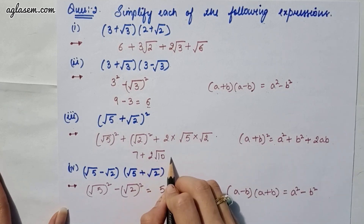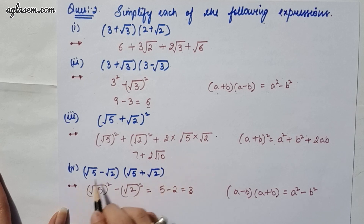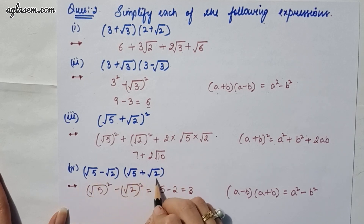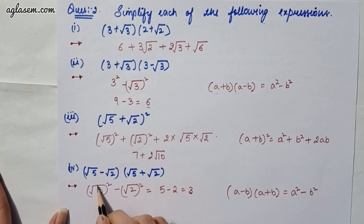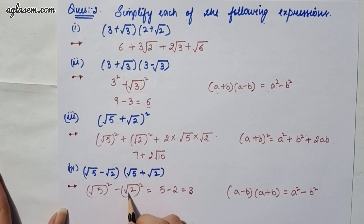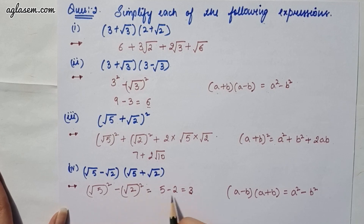Moving to our fourth part, which says (root 5 minus root 2)(root 5 plus root 2). The answer is root 5 whole square minus root 2 whole square, which gives you 5 minus 2, that is 3.